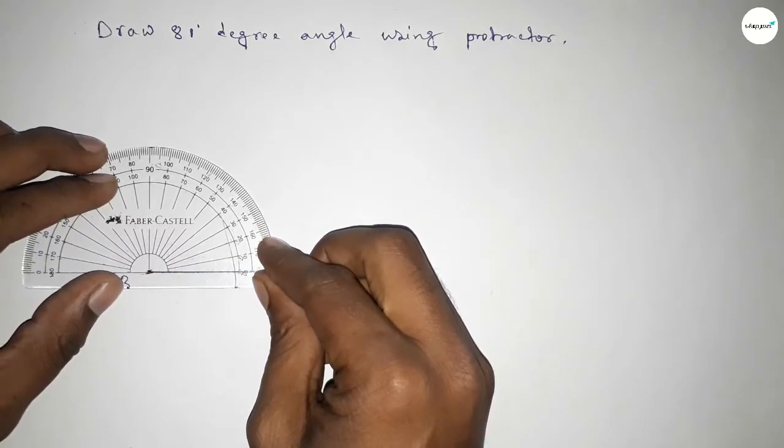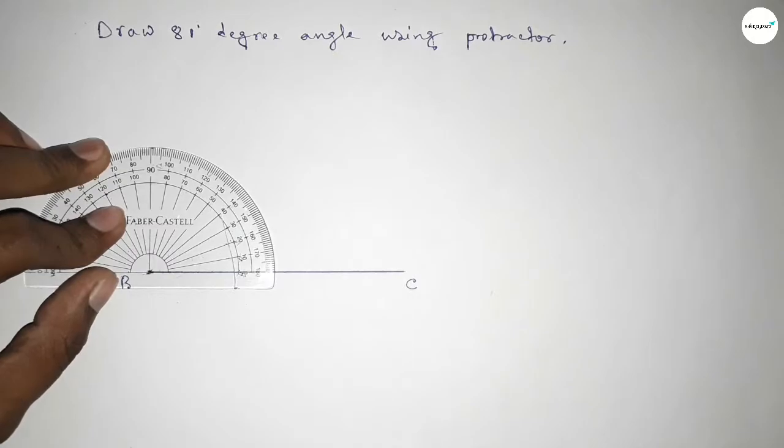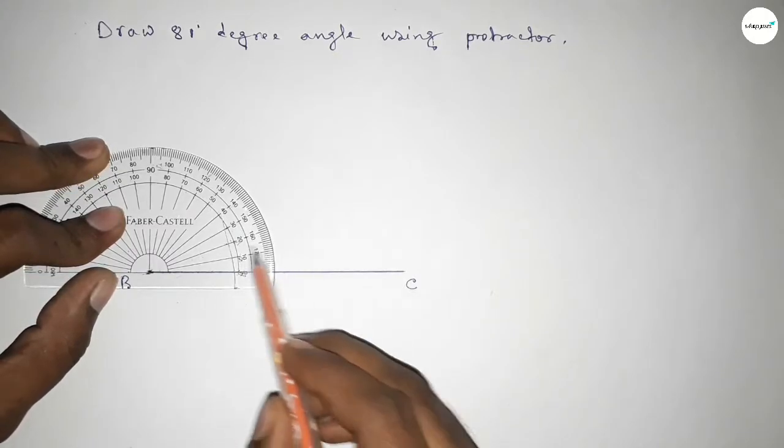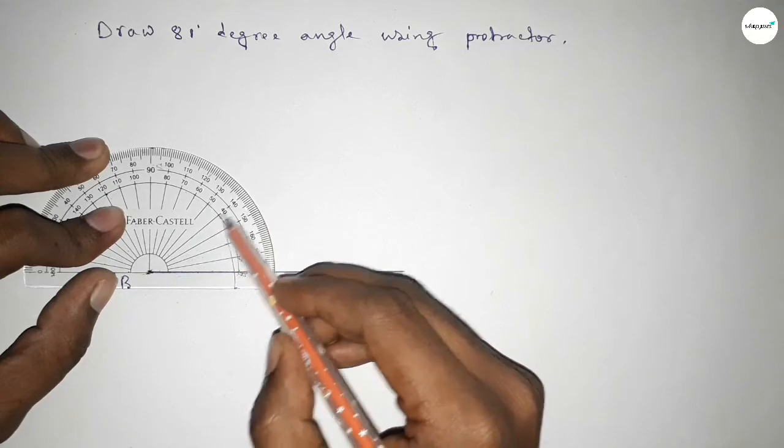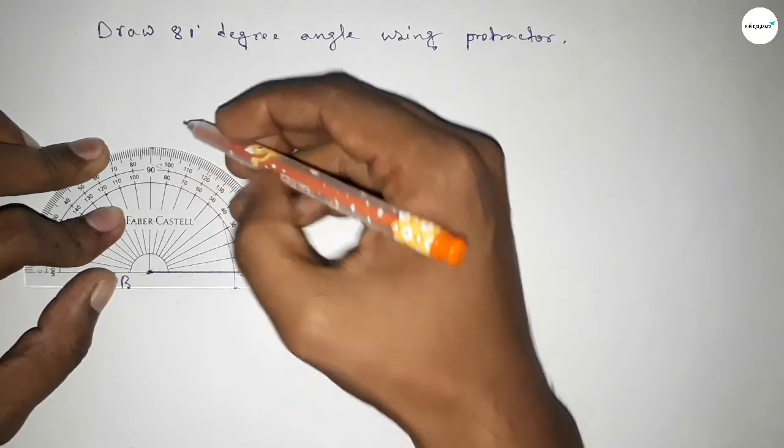Then counting the angles. So this is starting angle: 0, 10, 20, 30, 40, 50, 60, 70, 80.